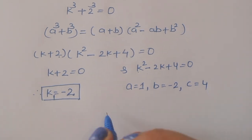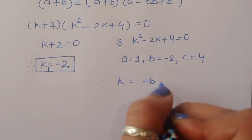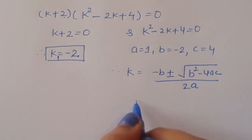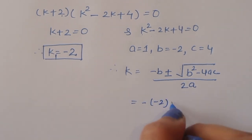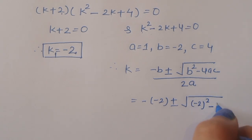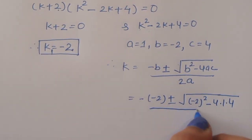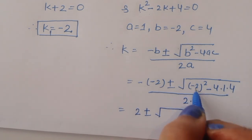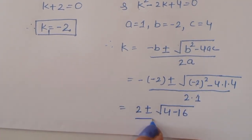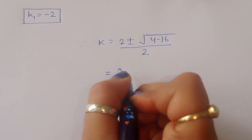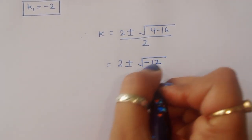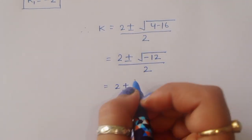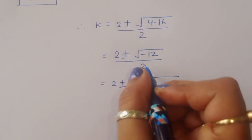For k squared minus 2k plus 4 equals 0, we have a equals 1, b equals minus 2, and c equals 4. Using the quadratic formula k equals minus b plus or minus square root of b squared minus 4ac all over 2a, substituting: 2 plus or minus square root of 4 minus 16, divided by 2, giving 2 plus or minus square root of minus 12, divided by 2.